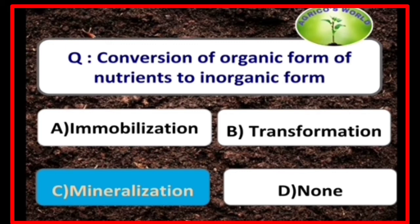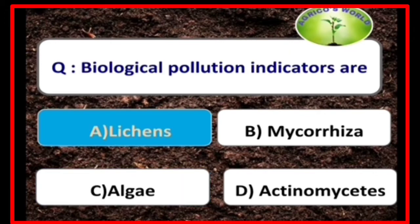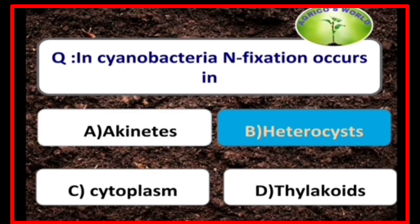Conversion of organic form of nutrients to inorganic form is called mineralization. Lichens are the biological pollution indicators. In cyanobacteria, nitrogen fixation occurs in heterocysts.